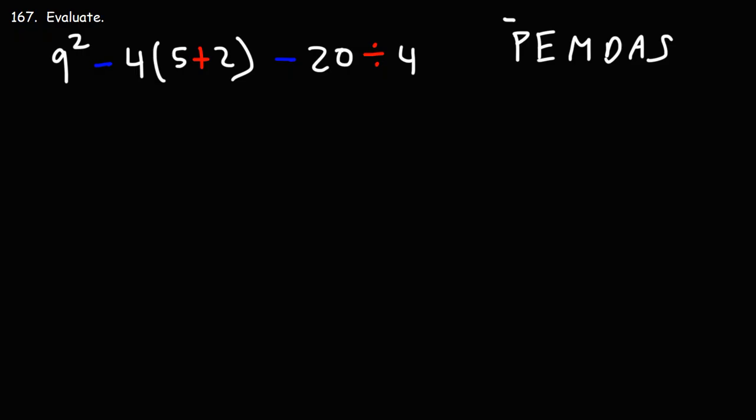The order of priority is from left to right. Working what's in the parentheses usually has the highest priority, followed by exponents. Multiplication and division have about the same priority level, and addition and subtraction have the same priority level.